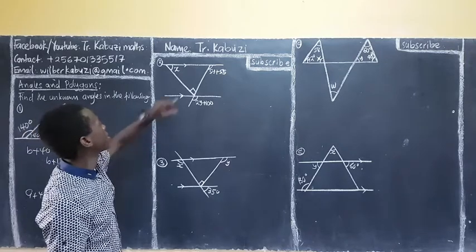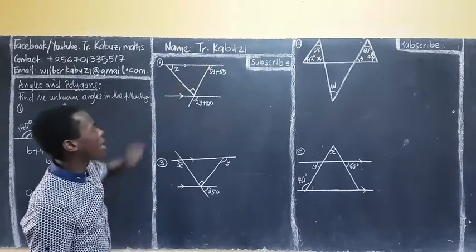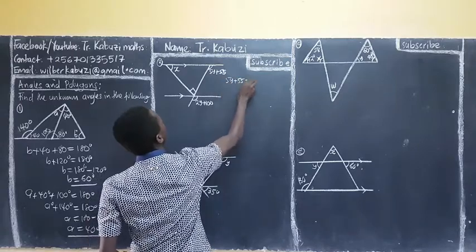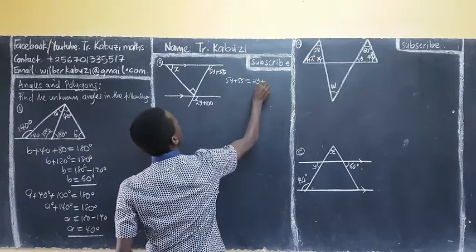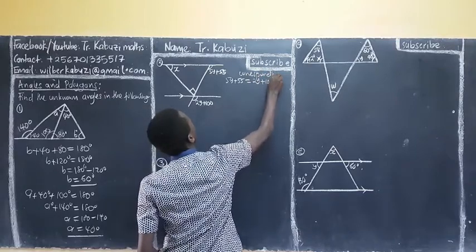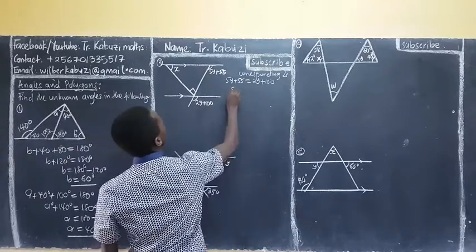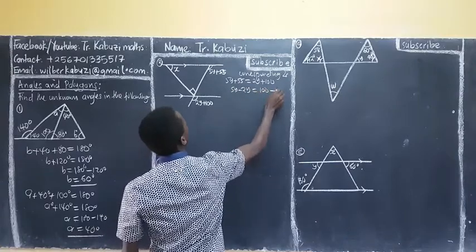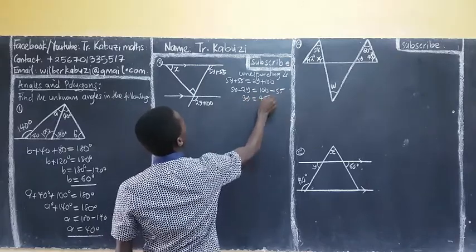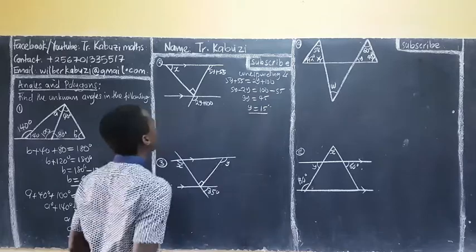When we come to this one, these two are parallel, meaning that this and this become corresponding angles, because these are the ones that become the transversal. So, 5Y plus 65 is equal to 20Y plus 100 — the reason being these are corresponding angles. So, if they are corresponding angles, you've got Y terms. I bring this aside: 5Y minus 20Y to collect Y terms, and I get 3Y equals negative 45. If you divide through by 3, your Y becomes 15.